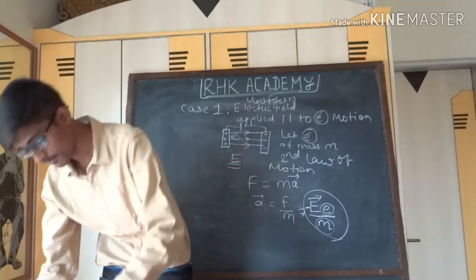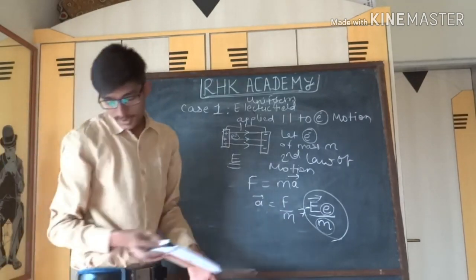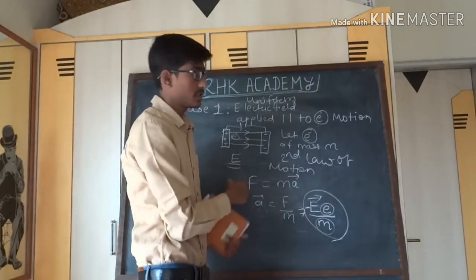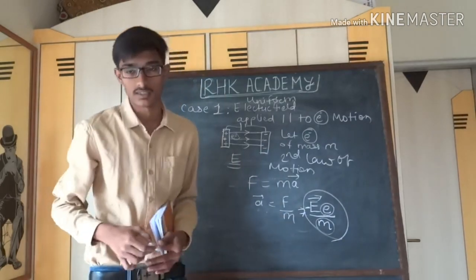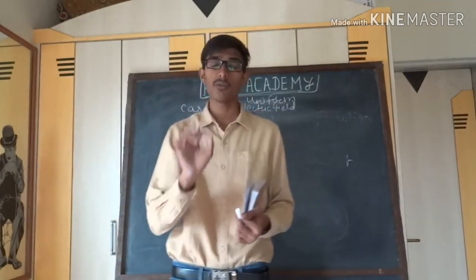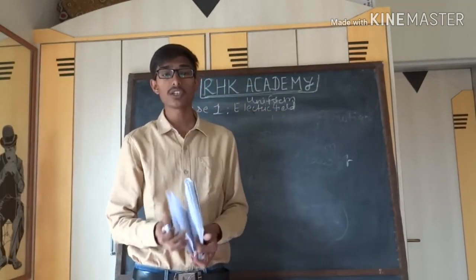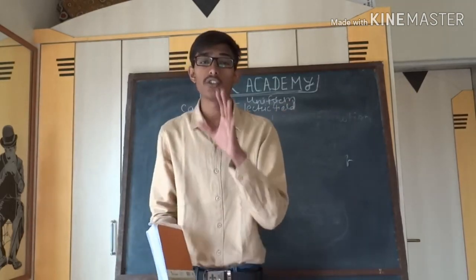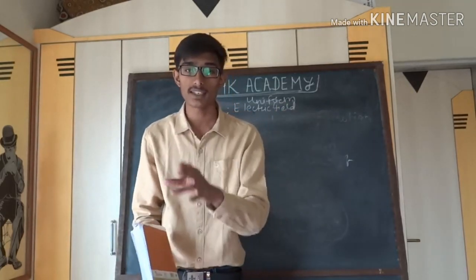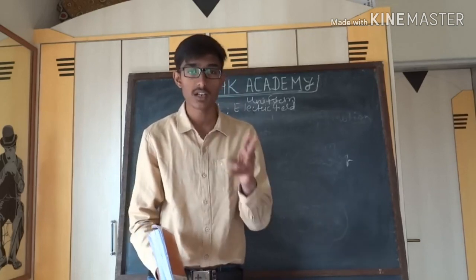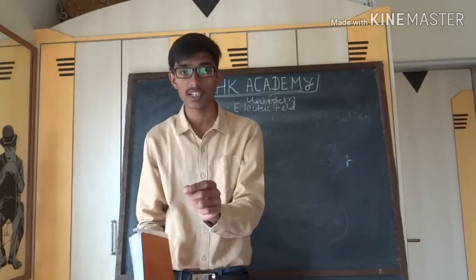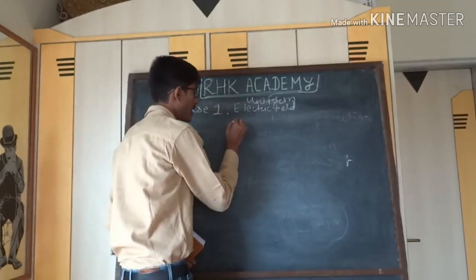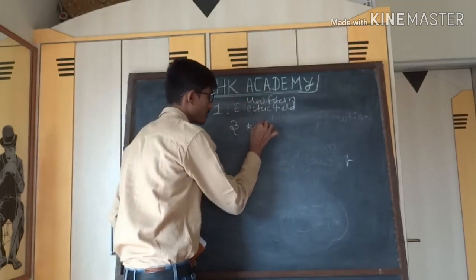Since the acceleration is constant, the system has uniform acceleration. According to kinematics, when a system has uniform acceleration we can apply the kinematic equations. So to describe the motion of the electron we can apply all three kinematic equations.